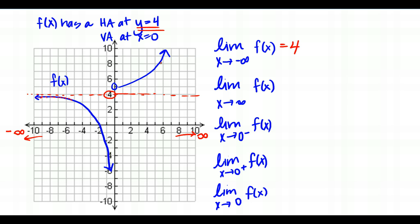What about when I approach positive infinity? The function's values are headed towards infinity, getting bigger and bigger, so the limit as X approaches positive infinity equals positive infinity. This one does not exist — it doesn't define a horizontal asymptote on the right side. Now the limit as X approaches 0 from the left: the Y values on the function are headed down towards negative infinity, so that limit is negative infinity.